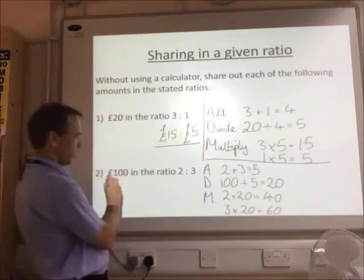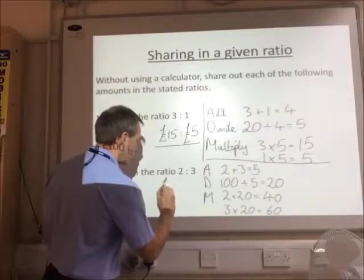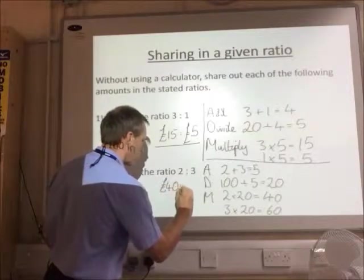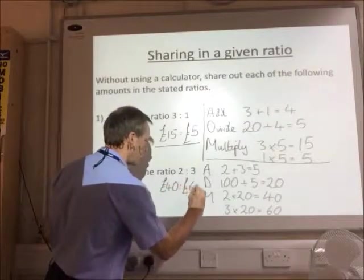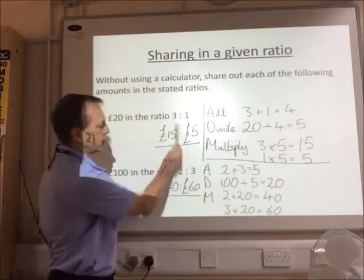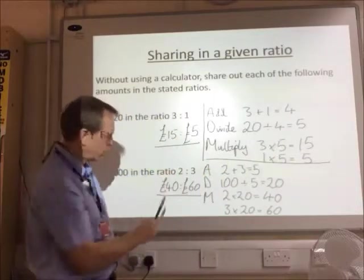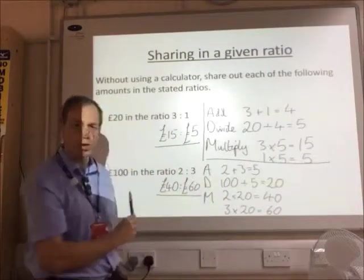So my answer, £100 in the ratio 2 to 3, is £40 to £60. On each occasion, I've written the number I've multiplied by underneath its respective ratio. So each time you can see it corresponds across.